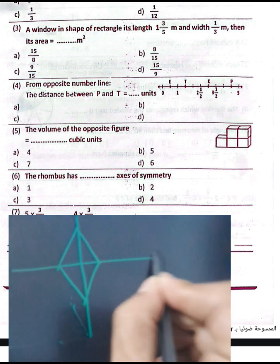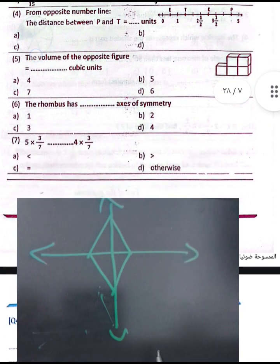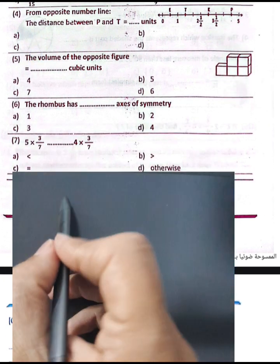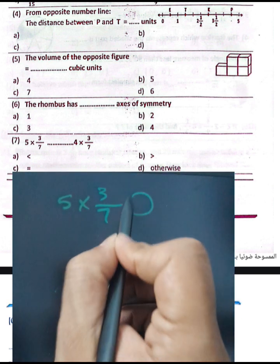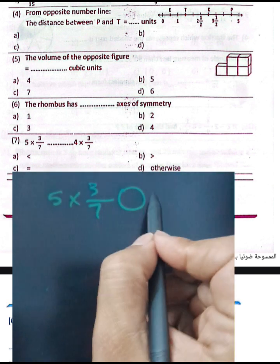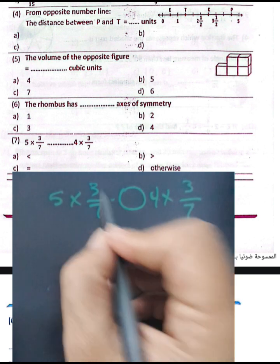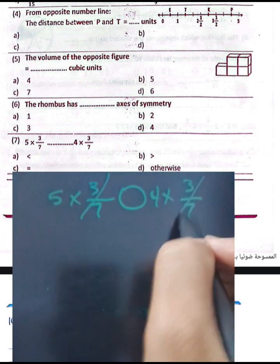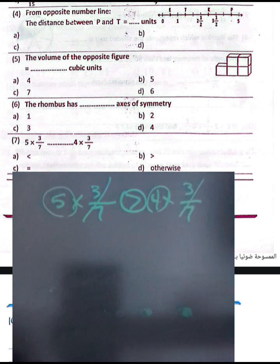Question number six: the rhombus has two axes of symmetry, the first and second. Question number seven: five times three over seven compared to four times three over seven. Since three over seven is the same fraction and five is greater than four, five times three over seven is greater.